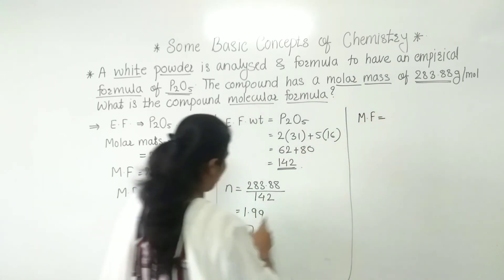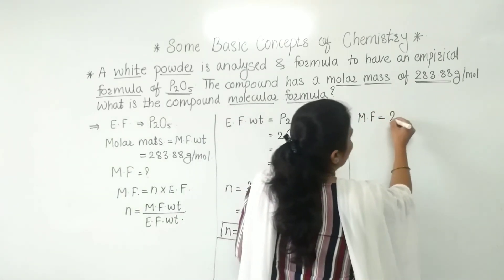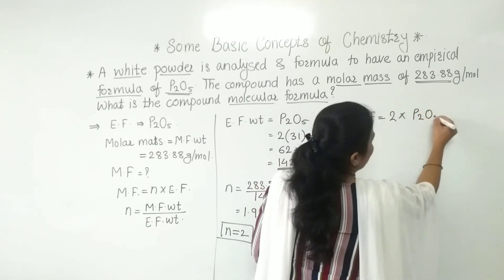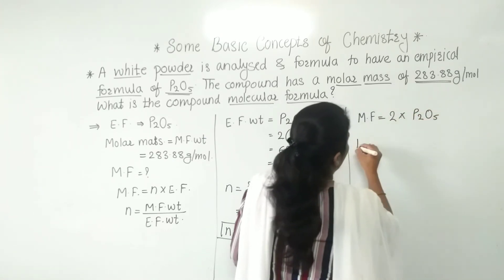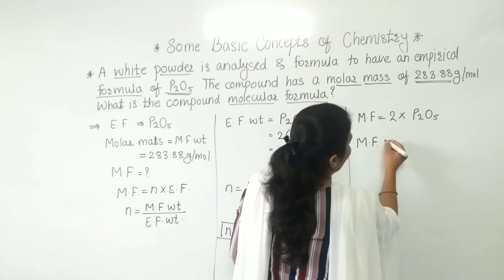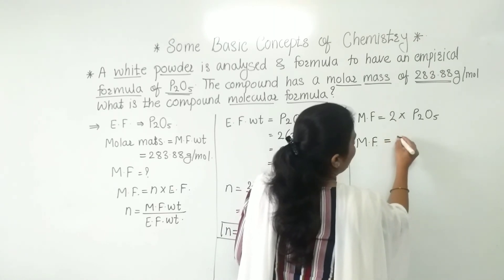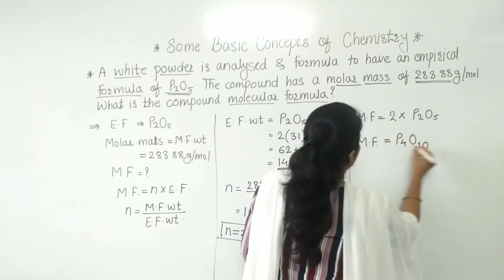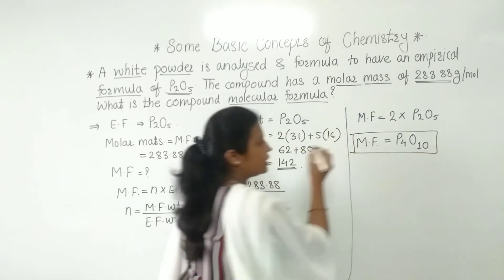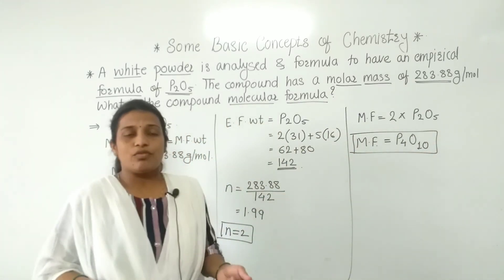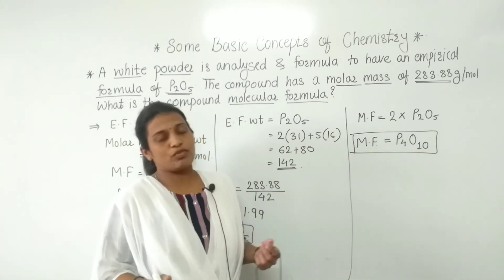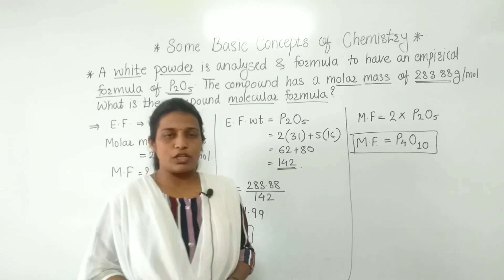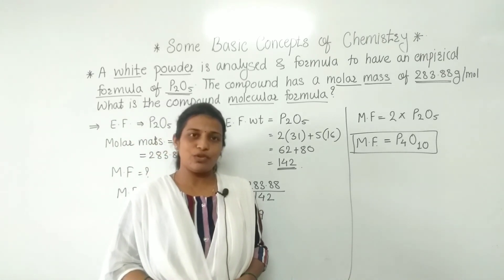Therefore, molecular formula = 2 × empirical formula = 2 × P2O5, which gives us P4O10. That is our molecular formula. We have completed this example on empirical formula and molecular formula. Thank you.